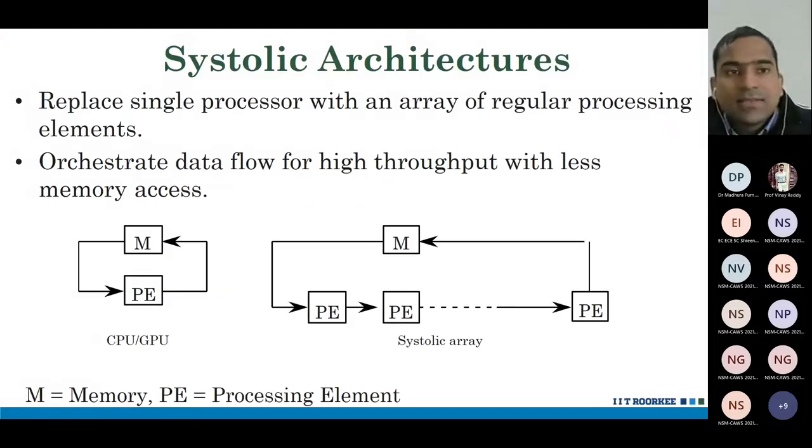Systolic architectures replace a single processor with an array of regular processing elements. Here, the main point is regular. The word regular or discipline is very important. That's the whole concept of systolic. We orchestrate the data flow for achieving high throughput. And the key idea is to reduce memory accesses. Because we are so regular, we can reduce the memory accesses.